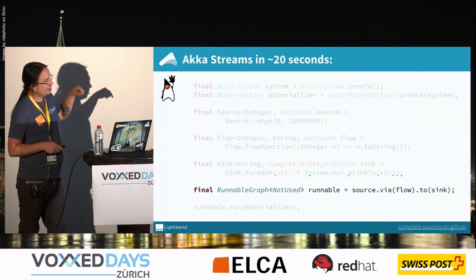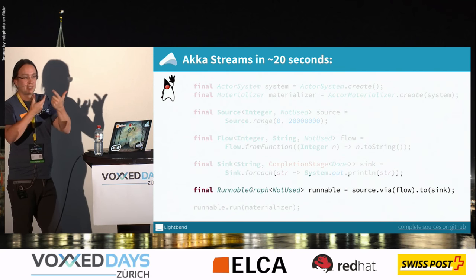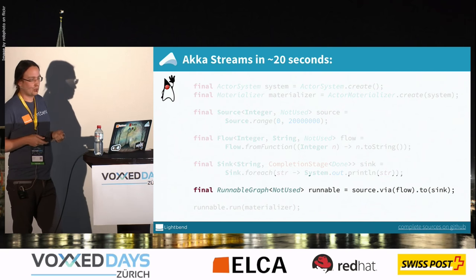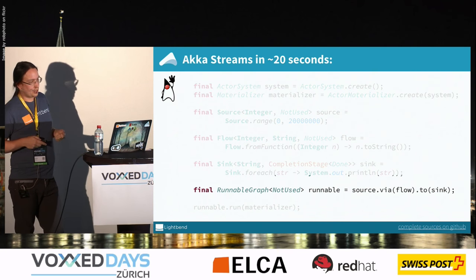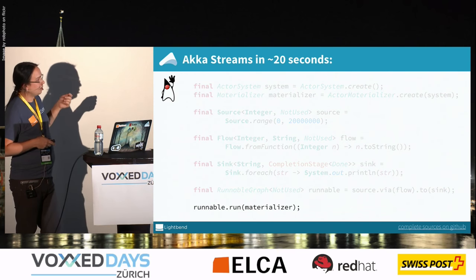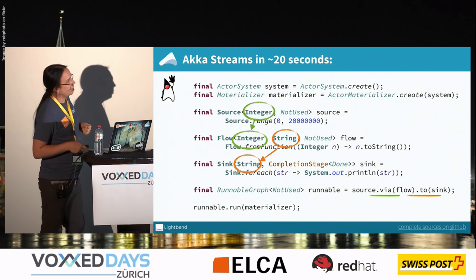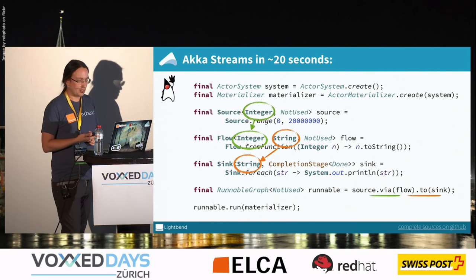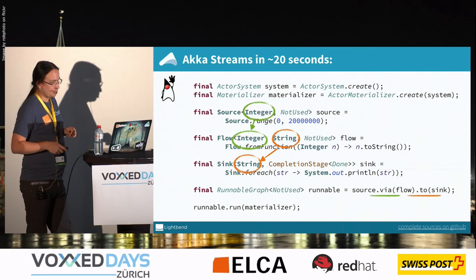We combine the Source with the Flow with the Sink — the types must align at the inlets and outlets, so if we try to combine something that doesn't accept the right type we get a compilation error. What we get back is a RunnableGraph, which we then run using the materializer. The Source emits integers, the Flow accepts integers and emits strings, and the Sink accepts strings — it's type-safe all the way through this flow-based API.